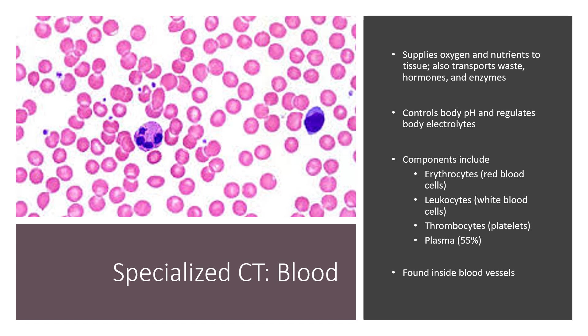Blood is important because it supplies oxygen and nutrients to tissue, and our bodily processes cannot function without oxygen, which gives our body the ability to make ATP. It also controls the body's pH and regulates electrolytes. Components of blood include erythrocytes (red blood cells), leukocytes (white blood cells), thrombocytes (platelets), and it's 55% plasma, where proteins, enzymes, and other blood components are located. Blood is found inside your blood vessels.